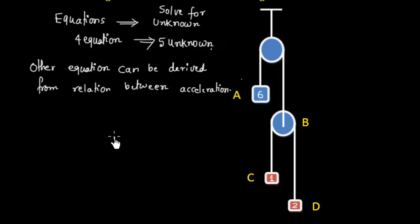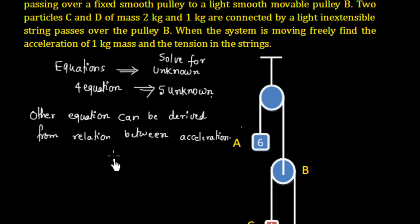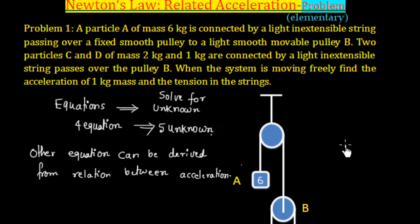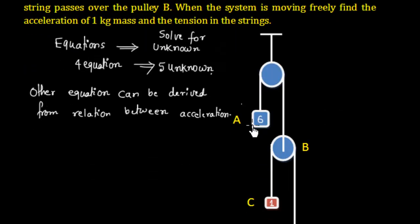Now, let us do this problem. We will use the principle of superposition. Let us first read the problem. It says a particle of mass A, that is 6 kg, is connected by a light inextensible string passing over a fixed smooth pulley to a light smooth movable pulley B. So we have a mass A, that is 6 kg, attached to a pulley B.